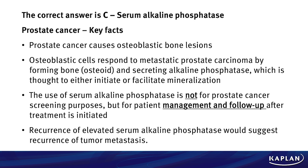In this case, the correct answer is C, serum alkaline phosphatase. As you might have suspected, we are dealing with prostate cancer here. Let's review some of the key facts. Prostate cancer causes osteoblastic bone lesions — remember that, that's important. Osteoblastic cells respond to metastatic prostate carcinoma by forming bone or osteoid, and they secrete alkaline phosphatase, which is thought to either initiate or facilitate the mineralization of that osteoid.